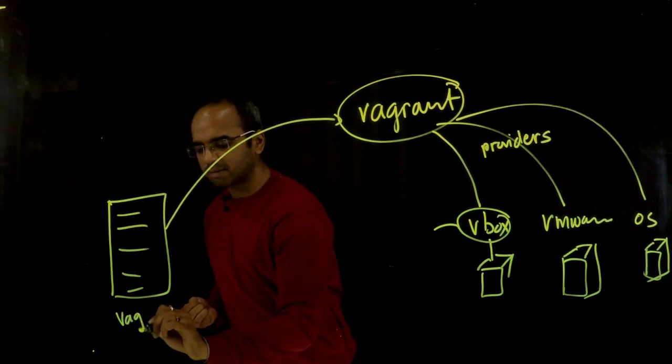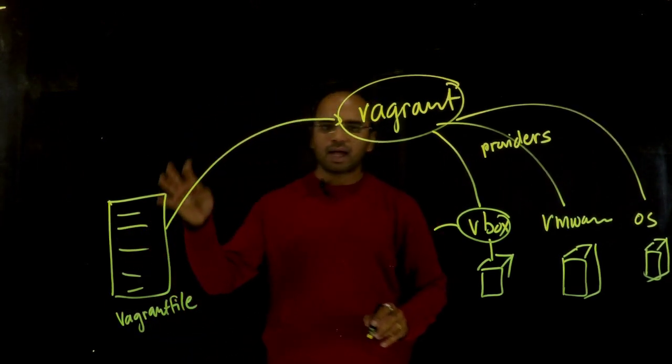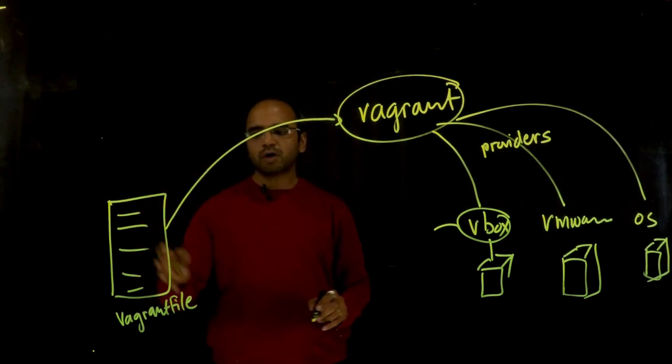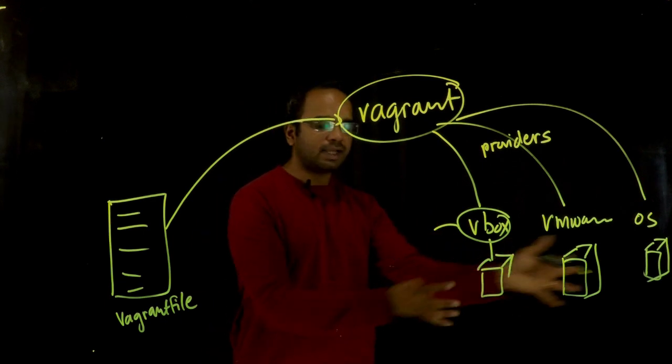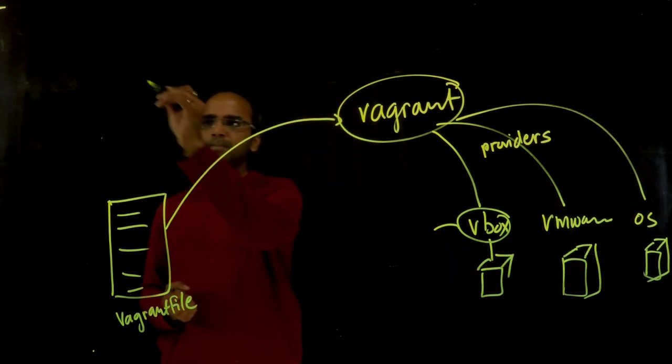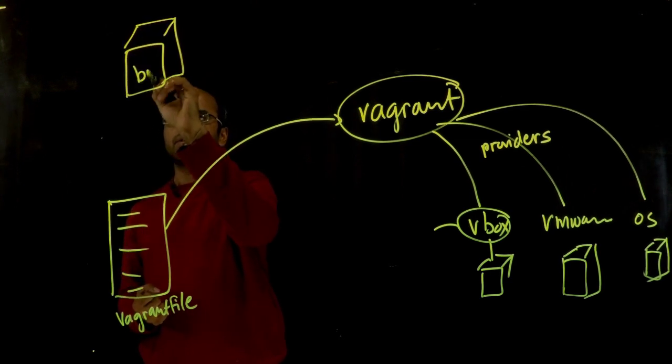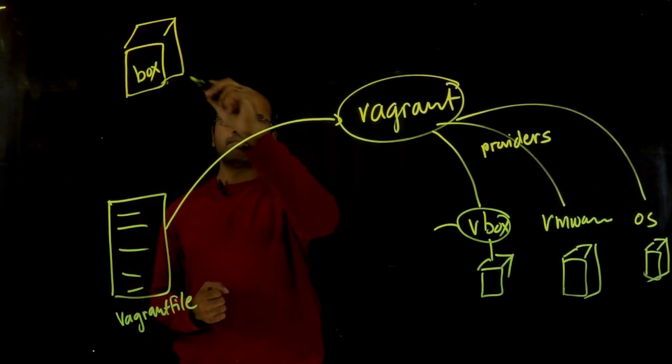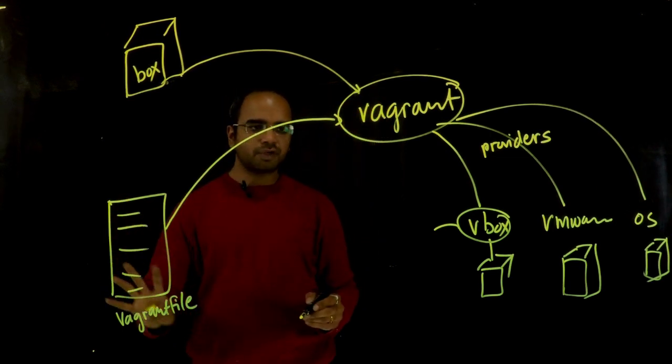The code is written using something called a Vagrant file, and this is where we define how to provision the VMs with what configuration. When it goes and provisions the actual VM, it needs a template. The concept of template in Vagrant uses something called a box file. So it imports a box, and you define which box to use and rest of the configuration here. That's what Vagrant reads and then provisions.